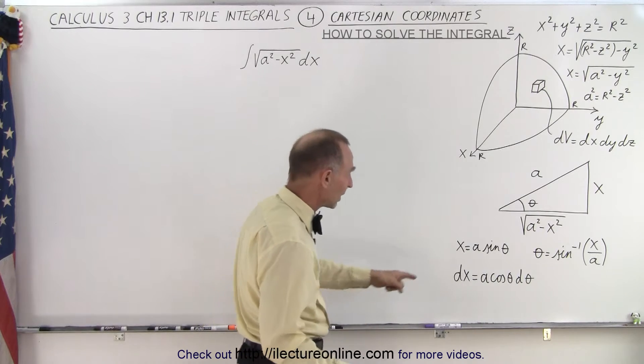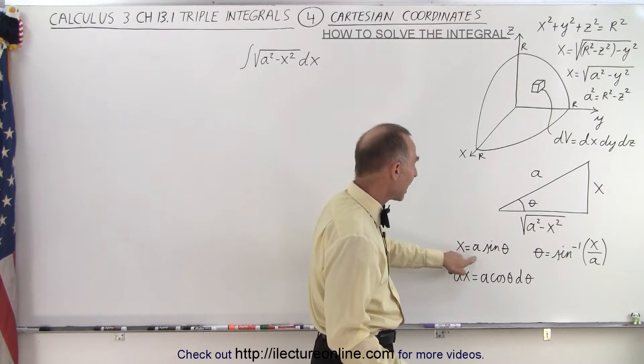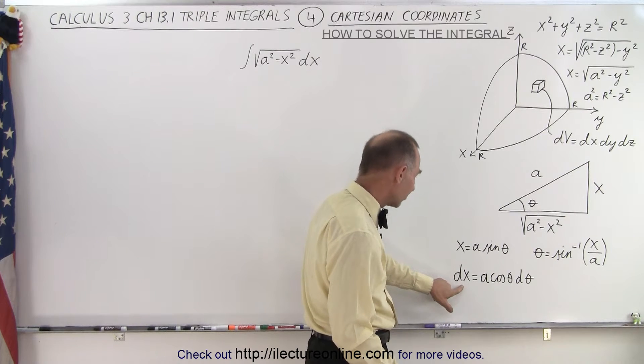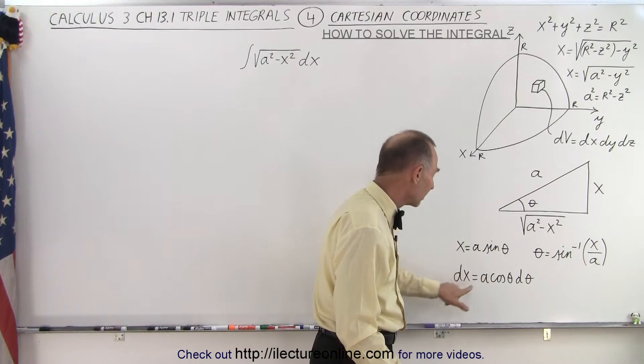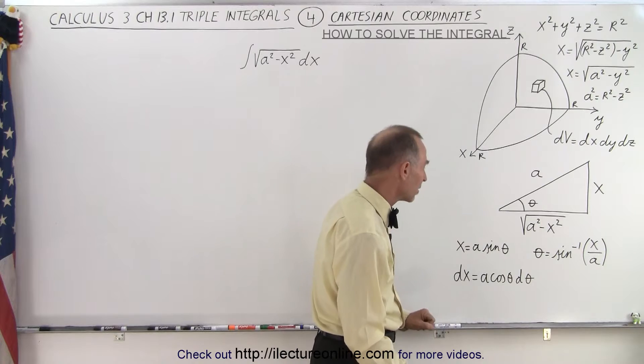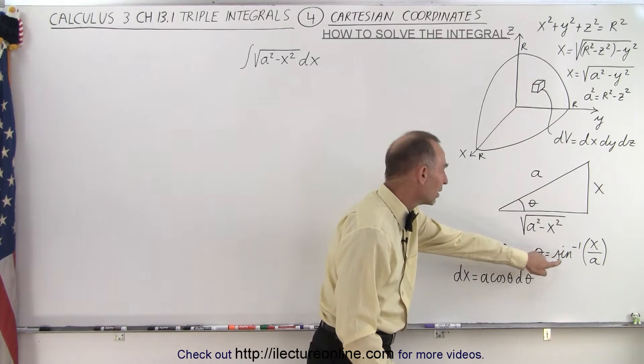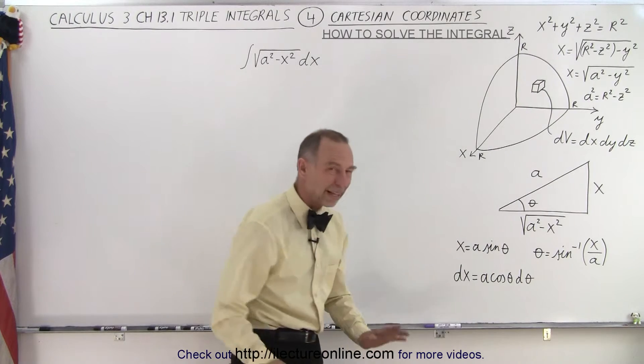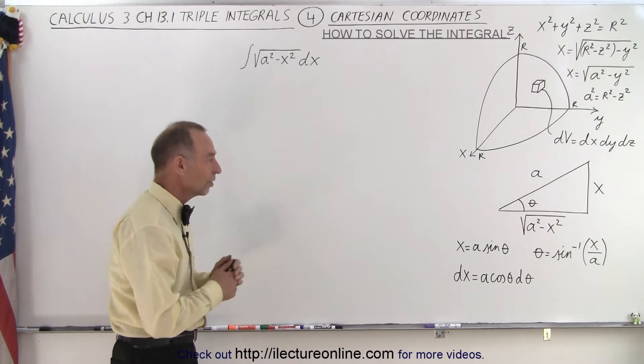Then we can use the trick substitution that x is equal to a sine theta, the hypotenuse times the sine of the angle. dx d theta would be a cosine theta, and then theta is equal to the inverse sine of the opposite side over the hypotenuse. And that's all we need to then solve this integral.